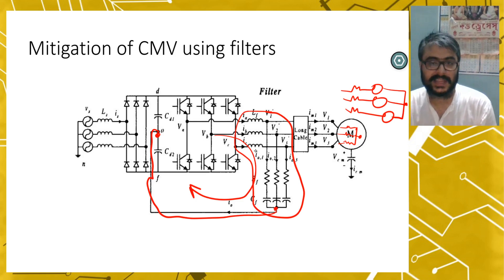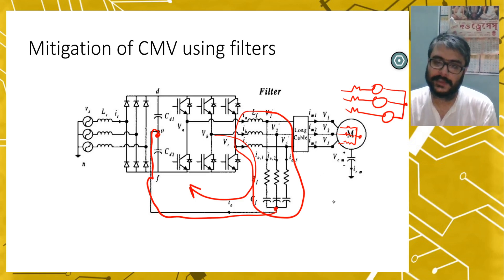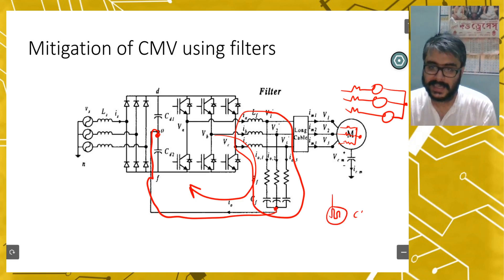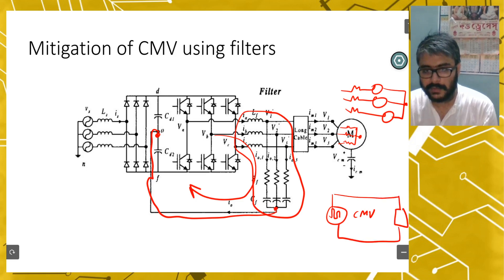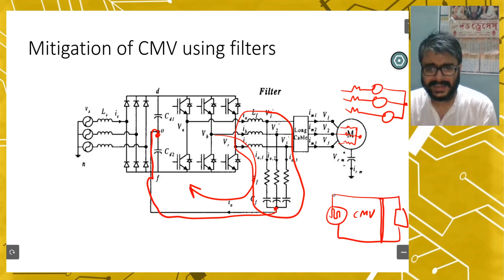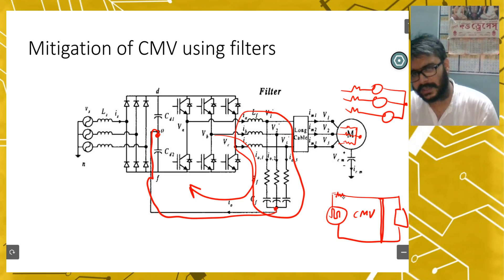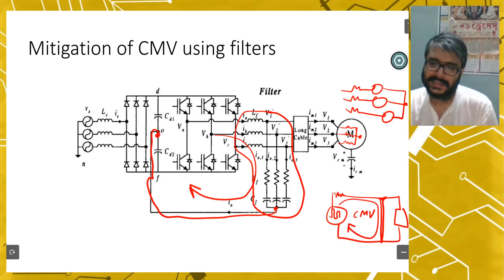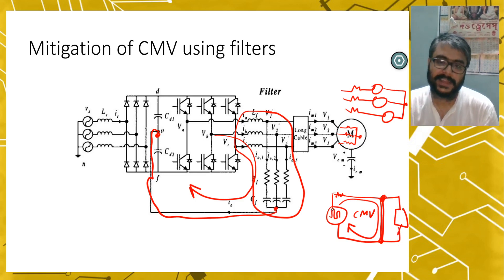So the common mode current or leakage current flows in the filter path and never flows via the motor. This common mode filter arrests this current and the motor is completely safe. The working principle is: if you have a CMV source with a load, and you short-circuit a low-impedance path, the common mode current will flow through the filter. The voltage across the load becomes zero because we have provided a very low impedance path for the CMV using the filter. This is how the load is protected.